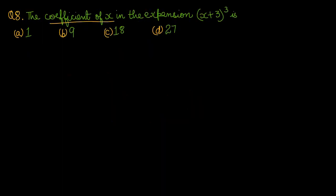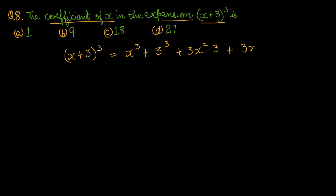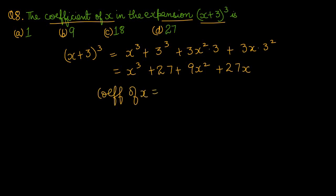Question number 8: the coefficient of x in the expansion of (x+3)³ is. (x+3)³ को open करते हैं: x³ + 3³ + 3x²(3) + 3x(3²) = x³ + 27 + 9x² + 27x। Coefficient of x निकालना है, तो x के साथ है 27। So coefficient of x is 27 — option number D is the right one.